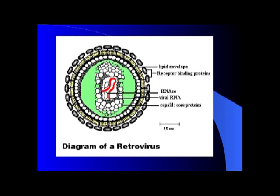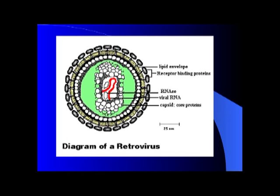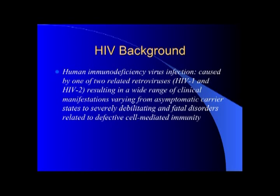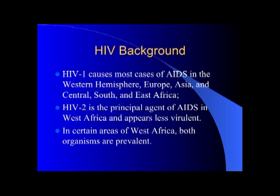Going back to the background: HIV is the retrovirus that contains the key enzymes and becomes part of the DNA. There are two related retroviruses, HIV-1 and HIV-2, which are clinically widespread. HIV-1 is mainly found in Europe, Asia, and the Western Hemisphere, while HIV-2 is mainly in Western Africa. HIV-2 is less virulent compared to HIV-1.